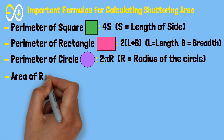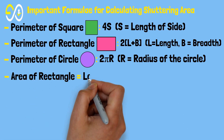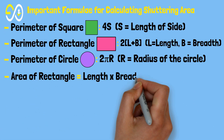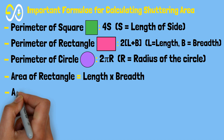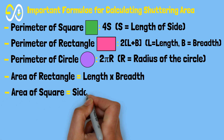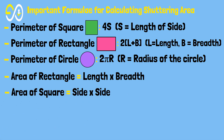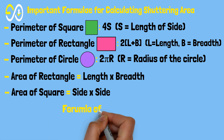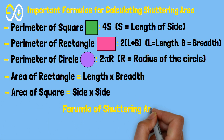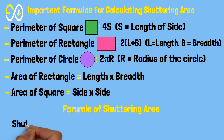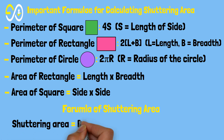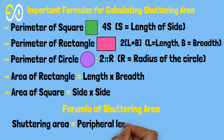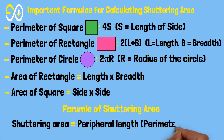Area of a rectangle equals length times breadth. Area of a square equals side times side. Formula for shuttering area: shuttering area equals peripheral length times depth.